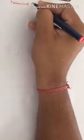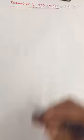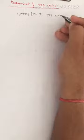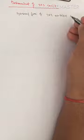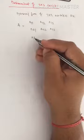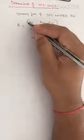Now let's calculate the determinant of a three cross three matrix. The general form of a three cross three matrix A can be written as a₁₁, a₁₂, a₁₃ in the first row; a₂₁, a₂₂, a₂₃ in the second row; and a₃₁, a₃₂, a₃₃ in the third row. This is the general three cross three matrix format.